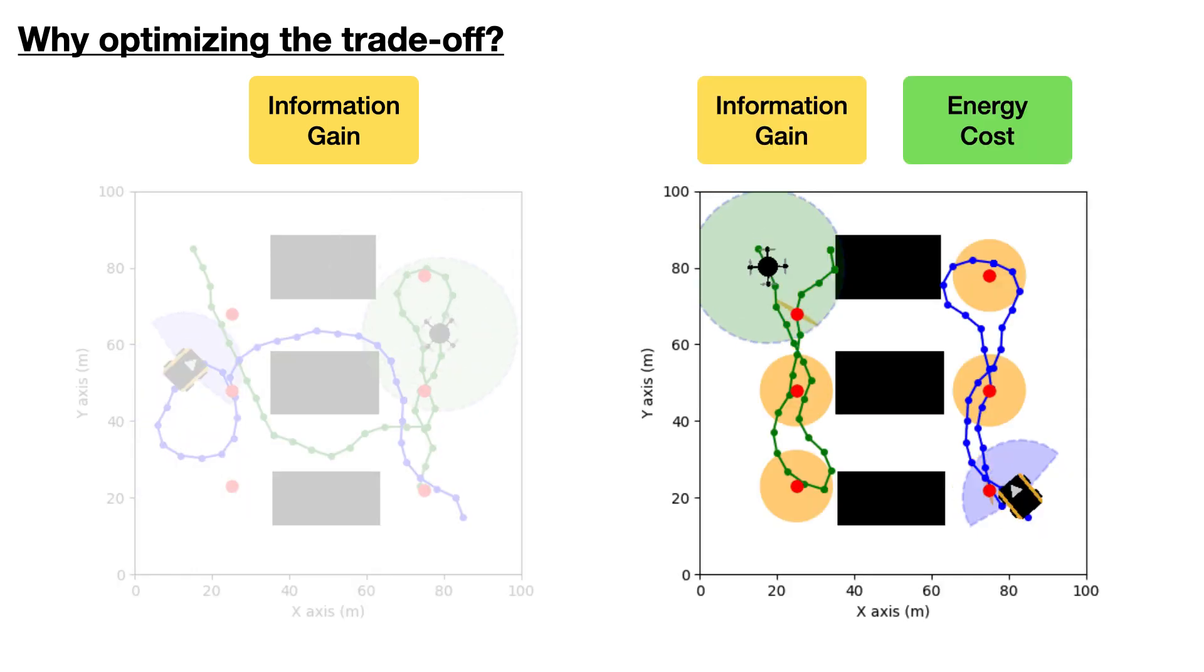On the other hand, when optimizing the trade-off between information and energy, the resultant trajectories achieve similar information gain with lower energy cost.